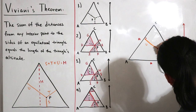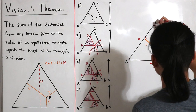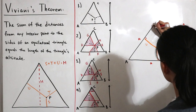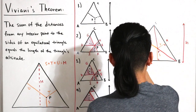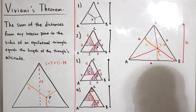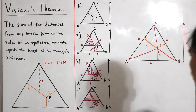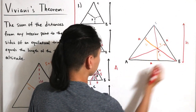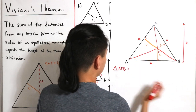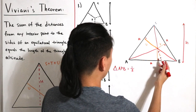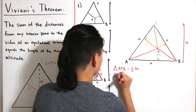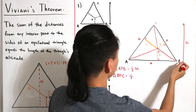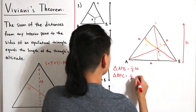Next, I draw line segments from the interior point P to each vertex — connecting P to B, P to C, and P to A. This divides triangle ABC into three smaller triangles. Using the area formula, the area of triangle APB equals one-half times the height s times the base a. The area of triangle BPC equals one-half times height t times a.